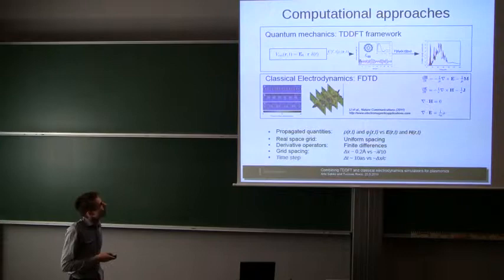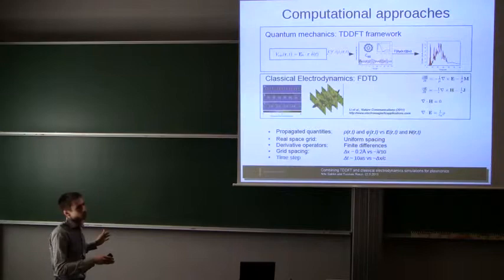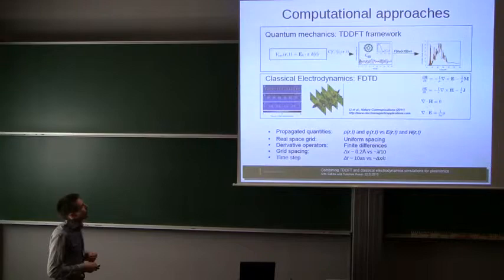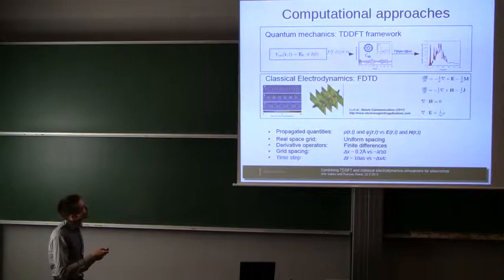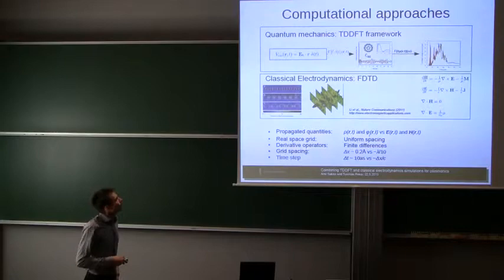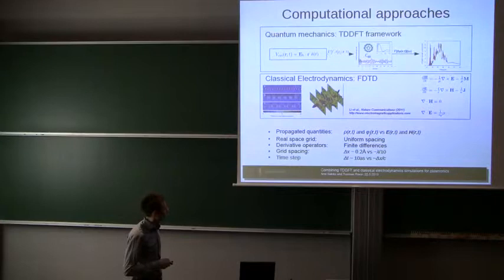In classical electrodynamics, there is a somewhat similar method called finite-difference time domain technique. In that method, you also have uniformly spaced grid points where you solve Maxwell's equations. The electric components are at this grid, and you propagate using time. You can use this for very different systems, for example, to study what happens when light hits a nano-antenna, or for nanoplasmonic systems. These are really similar methods in many ways, and that's why we are thinking that we should try to combine these methods in some way.